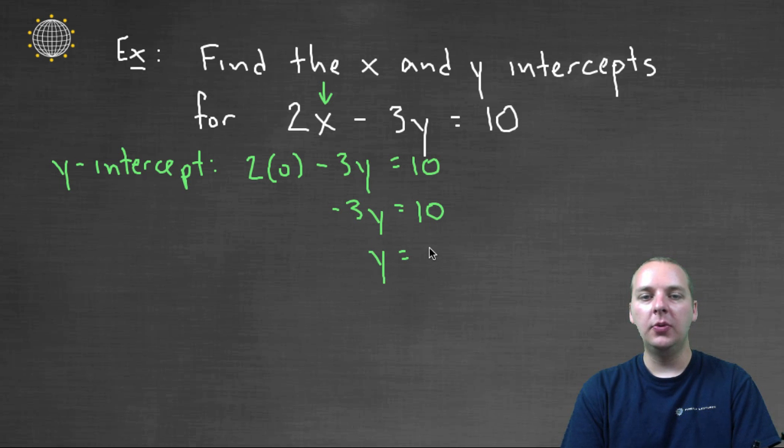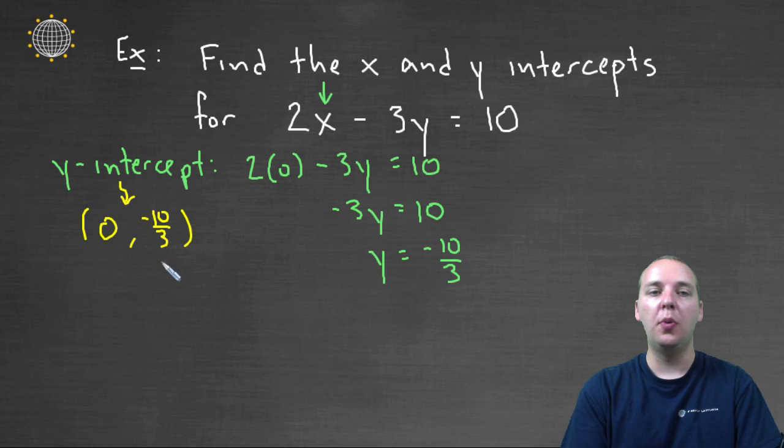And we'll get y equals negative ten-thirds. Now just to be clear, the actual y-intercept is actually a point. So we actually have an x and a y-coordinate for the y-intercept. The x you'll remember was zero, and the y was equal to negative ten-thirds. So this is actually the y-intercept right here, it's actually labeled as a point.